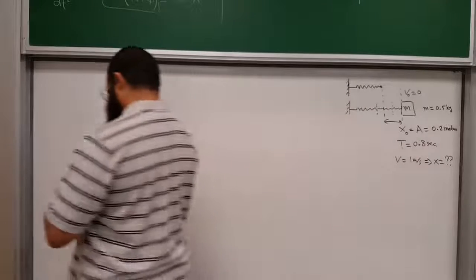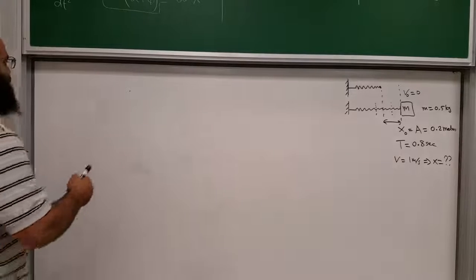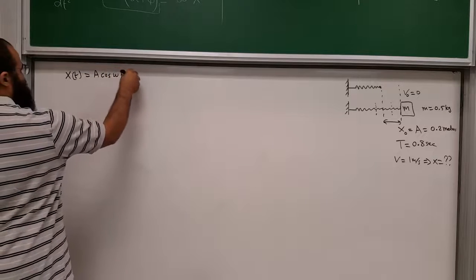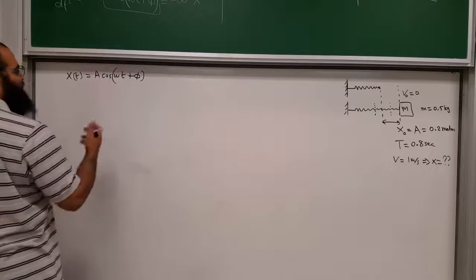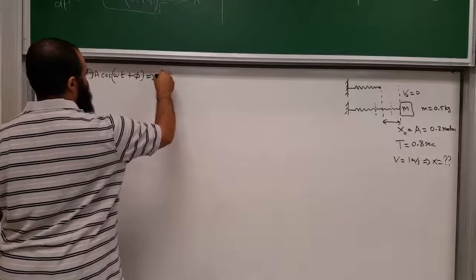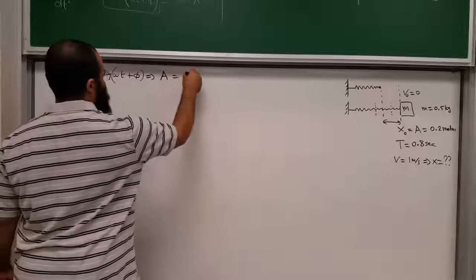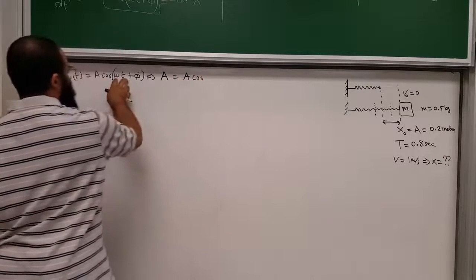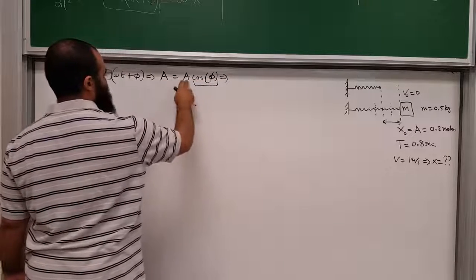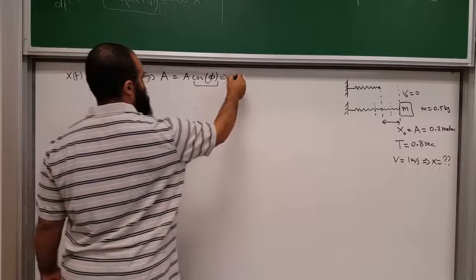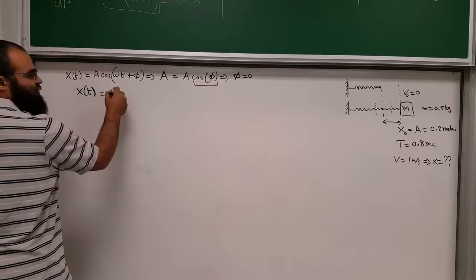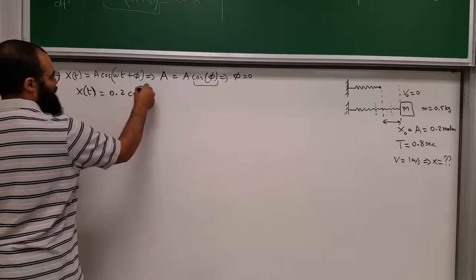This is a mass on a spring, so it's simple harmonic motion. We have x(t) = A cos(ωt + φ). Since we released it from rest, φ = 0 — at t = 0, x = A, so we get A = A·cos(0), which means cos(φ) = 1, so φ = 0. Therefore x(t) = 0.2·cos(ωt).